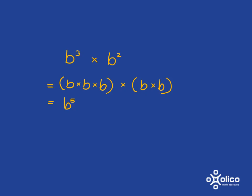If you've got b cubed multiplied by b squared, if we just write out what b cubed means, it means b times b times b. What does b squared mean? It means b times b.